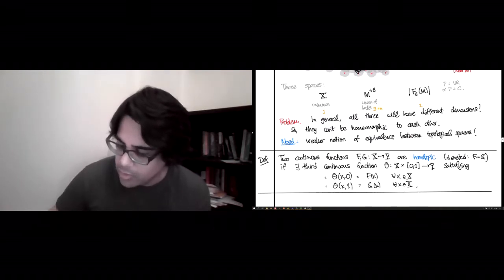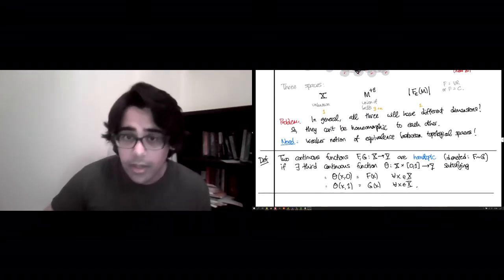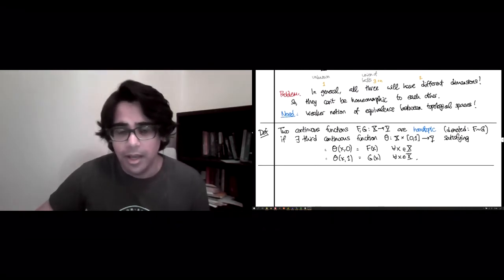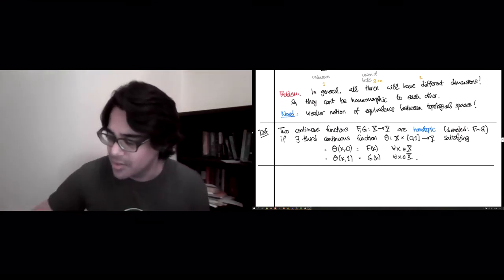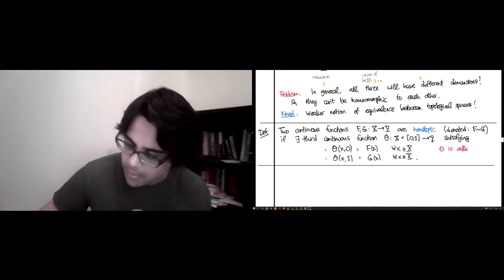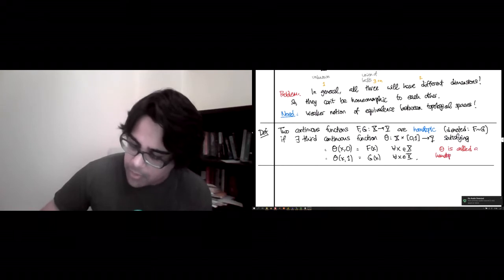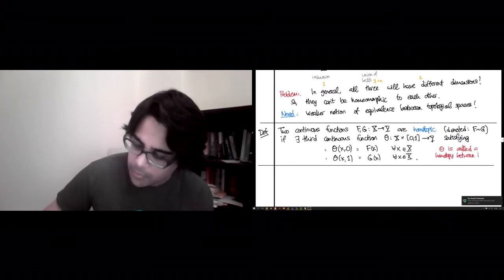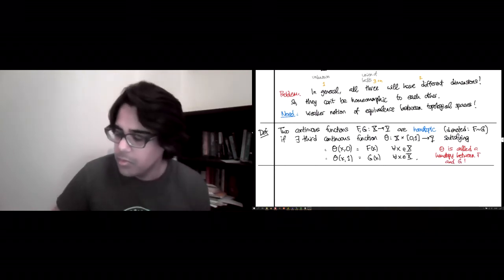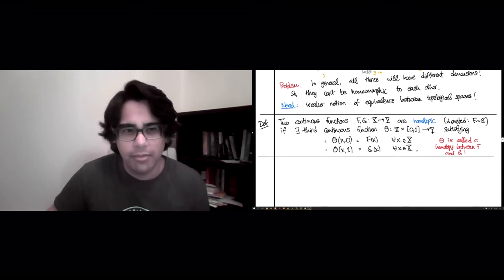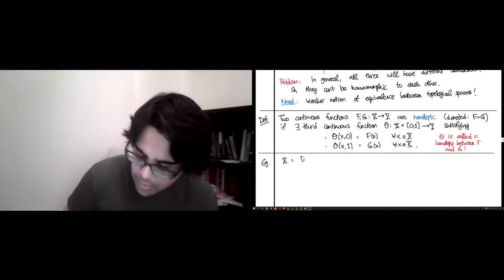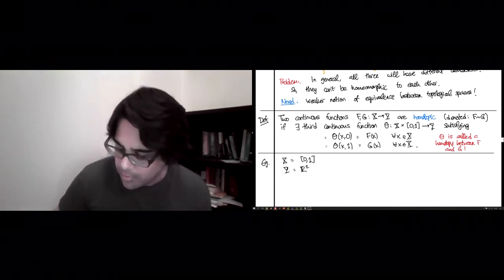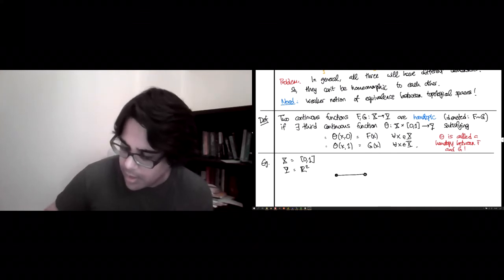That's the definition of when two functions f and g are homotopic. Now, it's good to keep in mind certain examples. We will see various examples of homotopies. And so this theta is called a homotopy between f and g. So we will see examples of homotopies. But it's good to already have a few sort of canonical pictures in mind. So let's give you an example where X is the unit interval and Y is R^2.